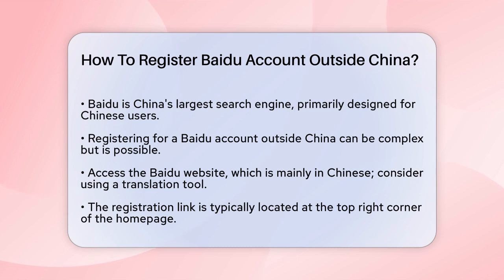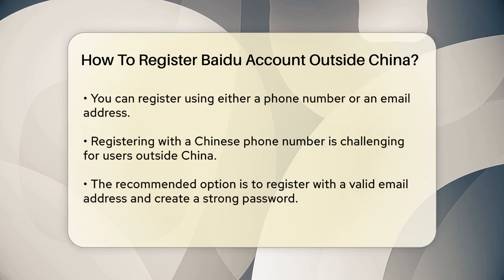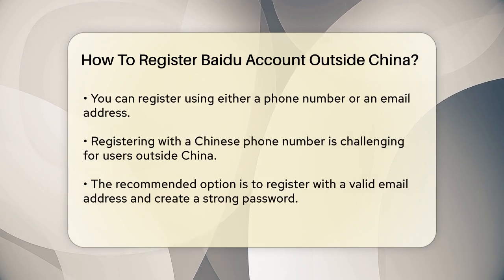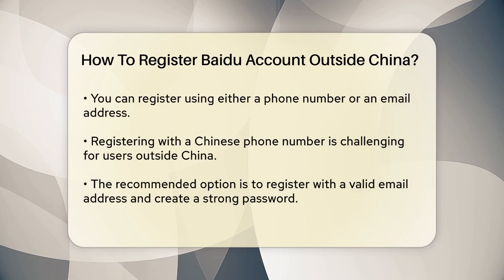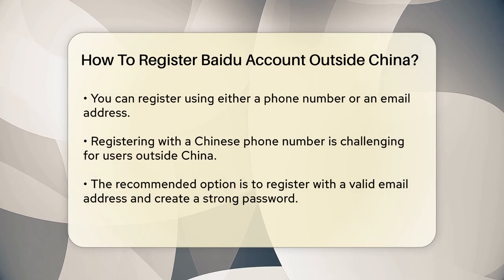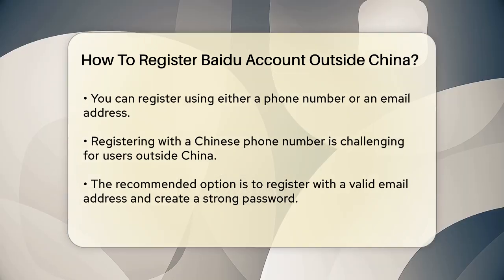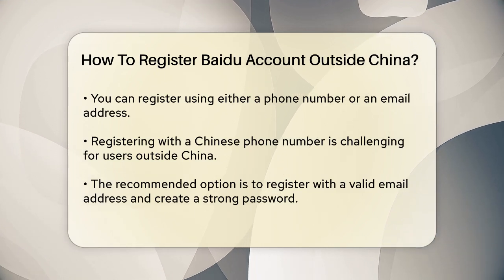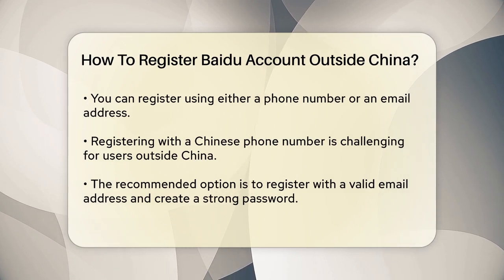Once you click on the registration link, you'll be taken to a page where you can choose between registering with a phone number or an email address. If you choose to register with a phone number, you'll need a Chinese phone number, which can be challenging if you're outside China. However, if you have access to a Chinese phone number, you can proceed with this option.